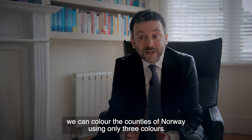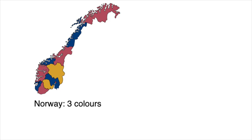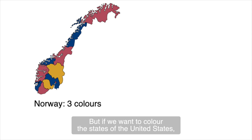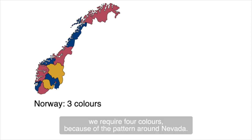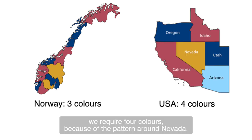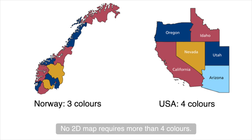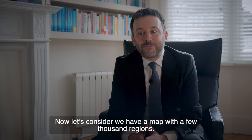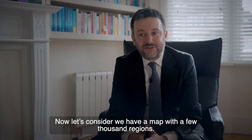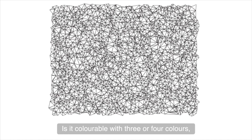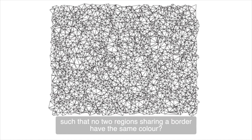For example, we can colour the counties of Norway using only three colours. But if we want to colour the states of the United States, we require four colours because of the pattern around Nevada. No two-dimensional map requires more than four colours. Now, let's consider this map, which has a few thousand regions. Is it colourable with three or four colours such that no two regions sharing a border have the same colour?